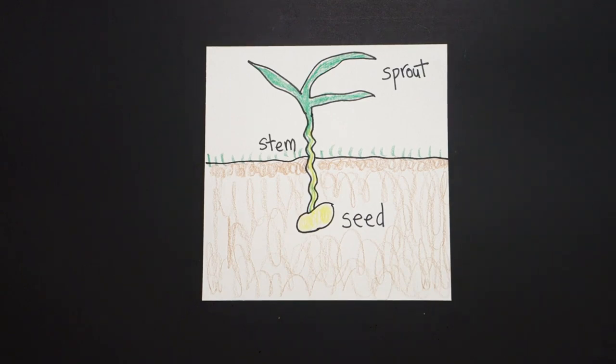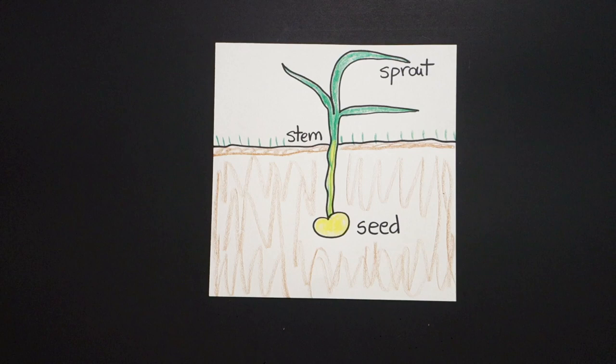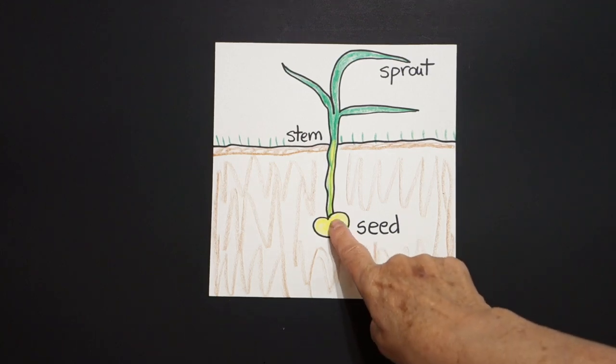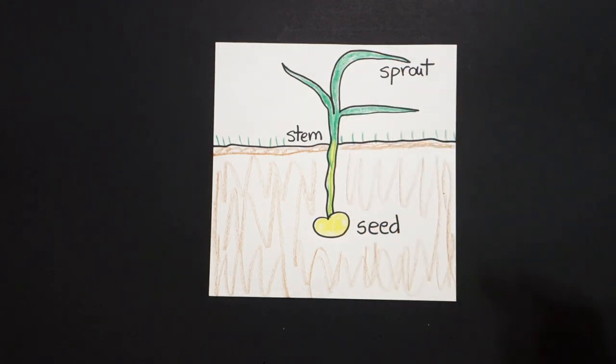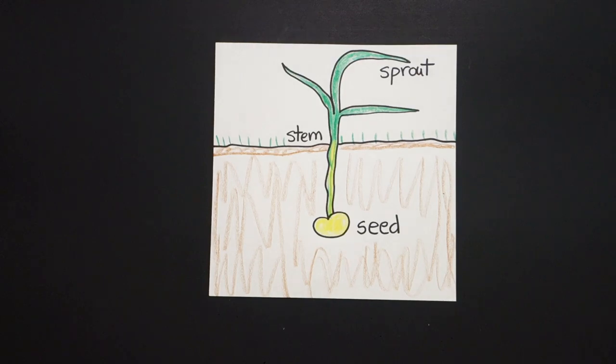All right, let's see what this looks like all colored in. Okay, here is my seed that grows into a stem that becomes a sprout. Okay, bye-bye.